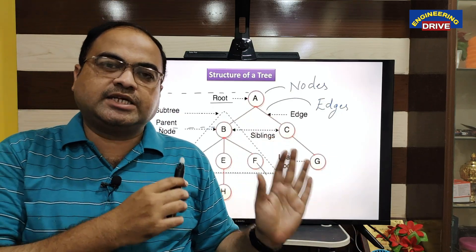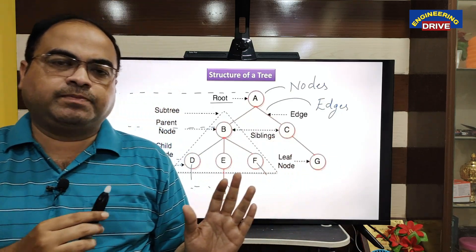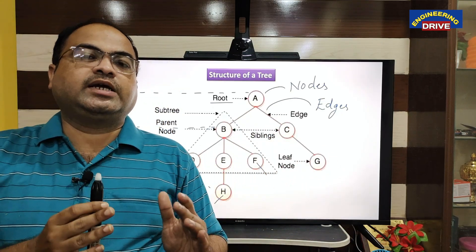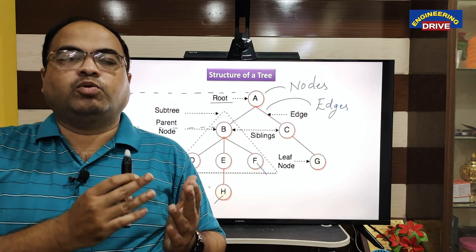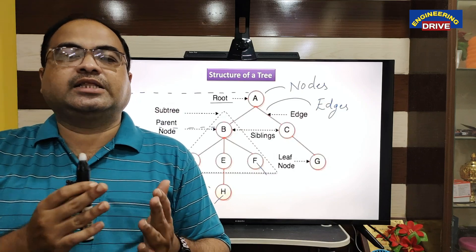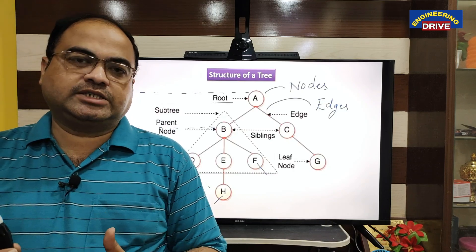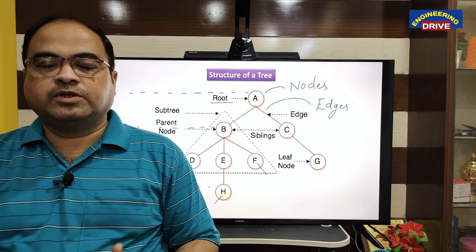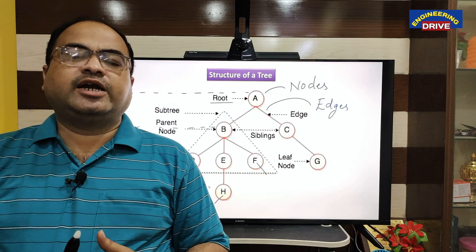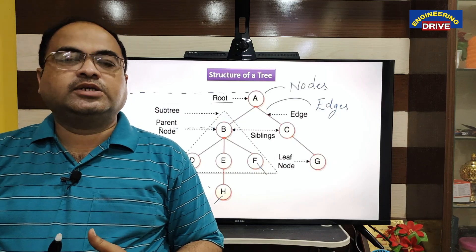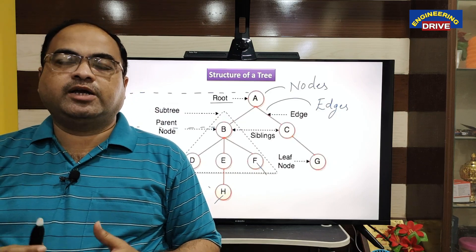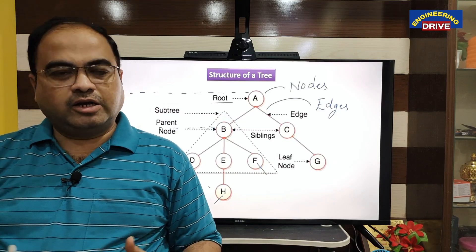Dear students, this is how the data is stored in a tree — this is the structure of a tree. A tree consists of two important things: one is nodes and another one is edges or links. With this, let me close today's session. See you soon everybody, take care.